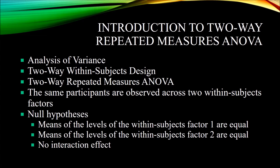Notice that in this design, each participant is exposed to every combination of the two within-subjects factors — the two independent variables — both types of lighting conditions and both types of sound conditions. Because each independent variable has two levels and we have two independent variables, we have four combinations. For a two-way repeated measures ANOVA, we have three null hypotheses. The first null hypothesis states that the means of the levels of within-subjects factor 1 are equal.